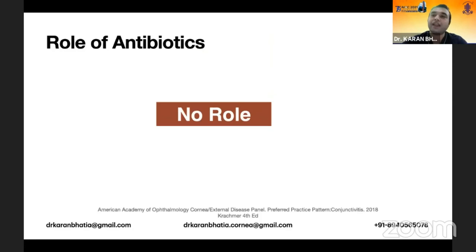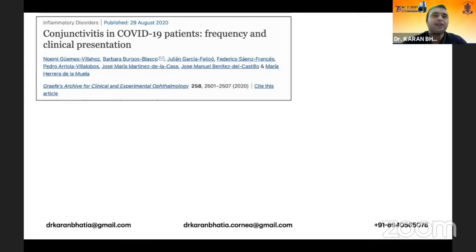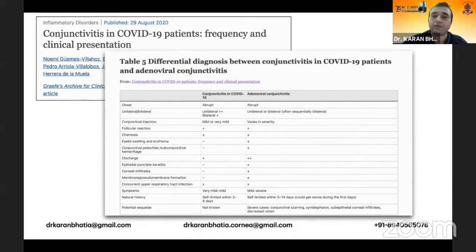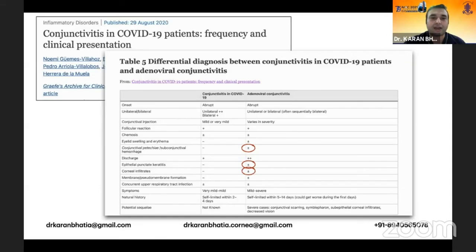Antibiotics have no role in viral or adenoviral conjunctivitis. Adenoviral conjunctivitis must be differentiated from COVID-19 conjunctivitis, which has become relevant due to the pandemic. Petechial hemorrhages, subconjunctival hemorrhages, corneal infiltrates including punctate epithelial keratitis, and membrane formation are typical signs characteristic of adenoviral conjunctivitis rather than COVID conjunctivitis. If a patient has a COVID history, then COVID conjunctivitis can be considered.